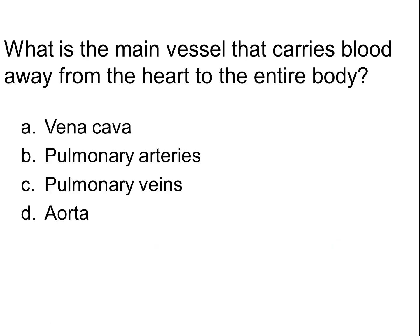Let's review quickly: what is the main vessel that carries blood away from the heart to the entire body? Is it A, the vena cava; B, the pulmonary arteries; C, the pulmonary veins; or D, the aorta? The answer is D, the aorta — that's the largest blood vessel and it serves the entire body. The vena cavas return blood to the heart, and the pulmonary arteries and veins deal with the pulmonary circuit, delivering blood to the lungs and returning it.